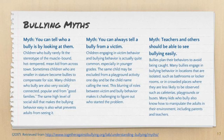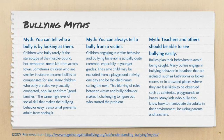The third myth is that teachers and other adults should be able to see bullying easily. Bullies plan their behaviors to avoid being caught. Many bullies engage in behaviors in spots where there are not a lot of adults or where behavior is monitored less frequently, such as locker rooms, restrooms, the cafeteria, outside at recess, and hallways between class periods. Many kids who bully also know how to manipulate the adults in their environment, including parents and teachers, which makes it very difficult to be aware of everything happening.